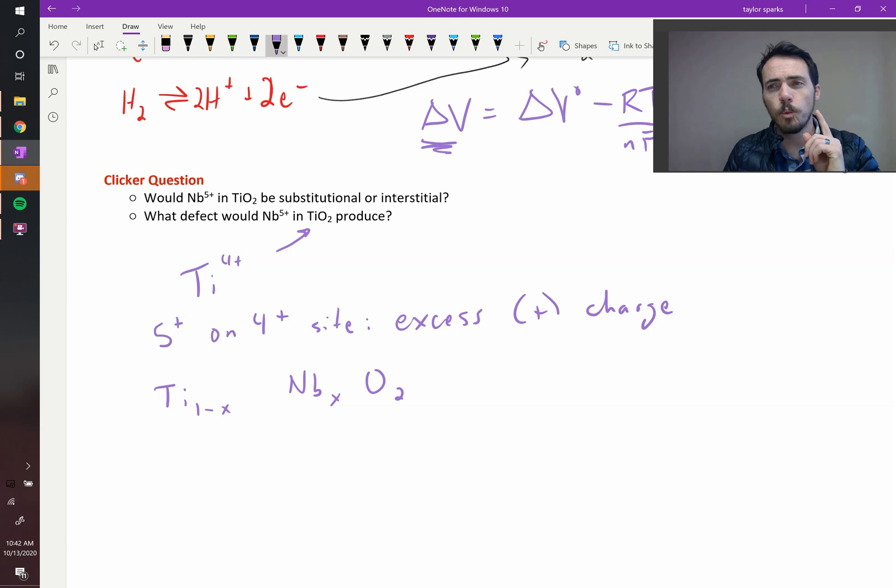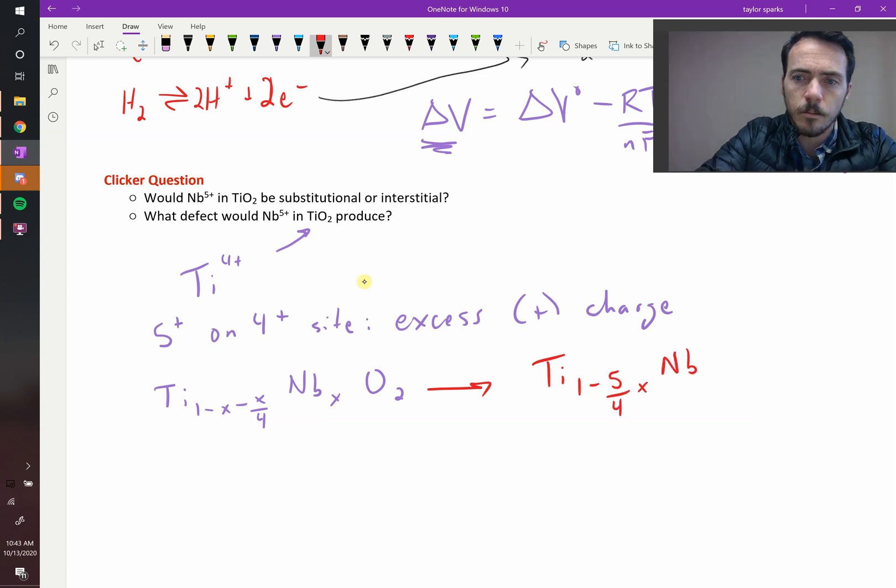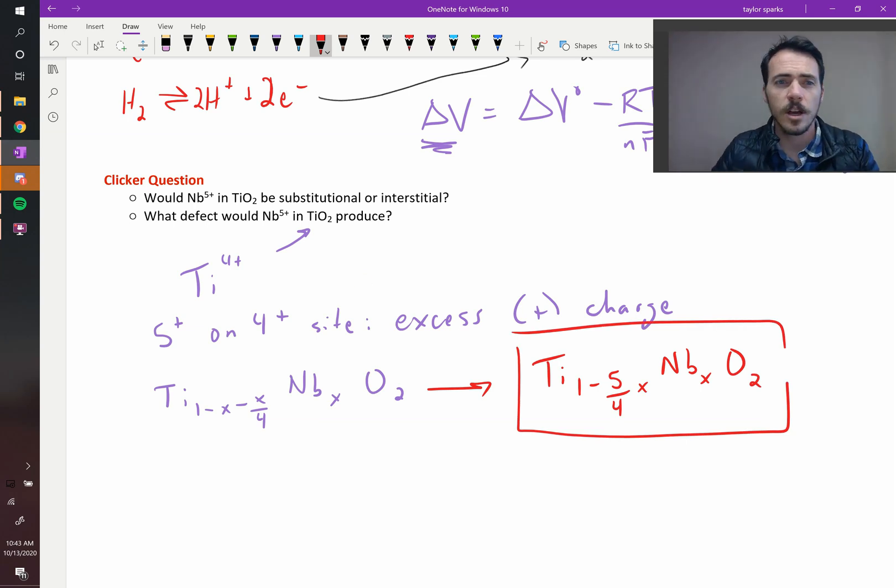Well, for every one titanium that gets replaced with a niobium, we have excess positive charge. But if we remove a titanium charge, we take away 4 at a time. So we're going to get 1 from the substitution, and then we're going to have to, for every 4 substitutions, we can remove another titanium. So there you have the formula. We could combine that further to get that the new defect formula would be titanium, 1 minus 5 fourths X, niobium X, oxygen 2. That would be the new defect formula for this example of an alleovalent substitution.